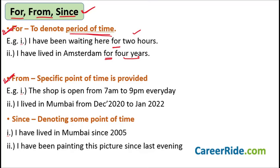'From' is used when a specific point of time is provided. 'The shop is open from 7 a.m. to 9 p.m. every day' — specific point of time is given: 7 a.m. opening, 9 p.m. closing. Similarly, 'I lived in Mumbai from December 2022 to January 2022' — because there is specific time mentioned, we use 'from' here.